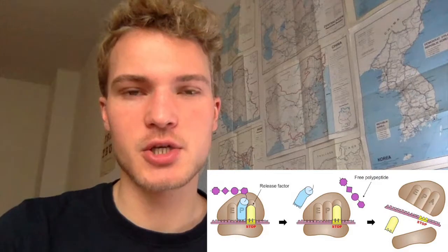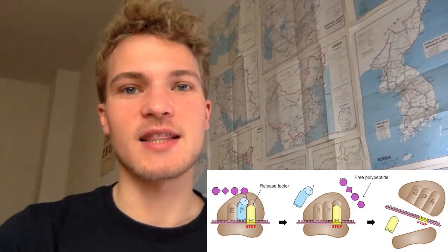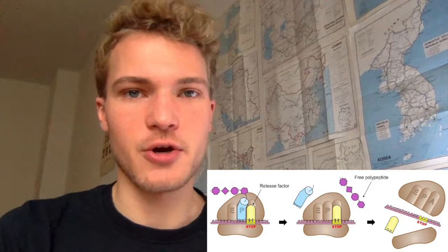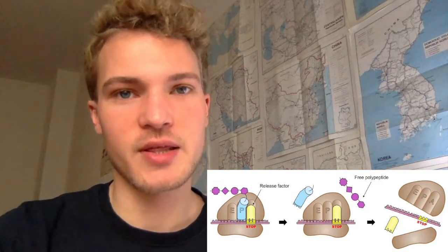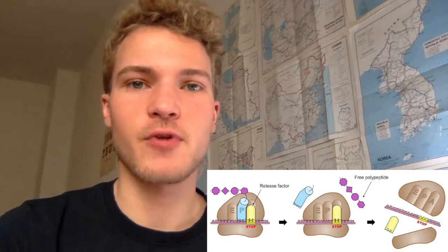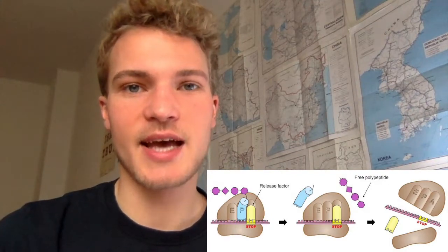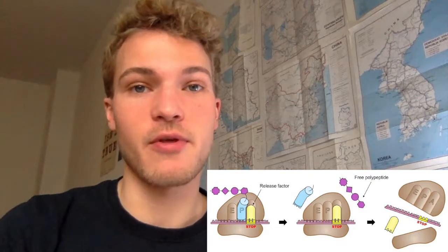This cycle of events is called elongation and translocation — we are elongating our polypeptide and translocating the ribosome along the mRNA to read new codons. Finally we get to termination, where at the stop codon no new tRNA moves in; instead everything disassembles. The mRNA is set free, the ribosomal subunits detach, and we are left with our newly created polypeptide.